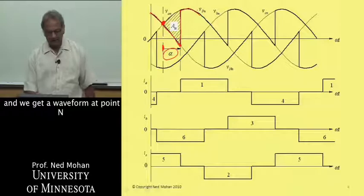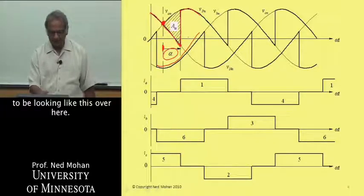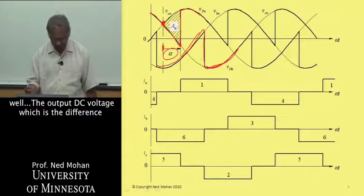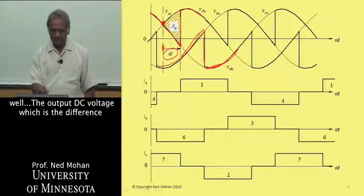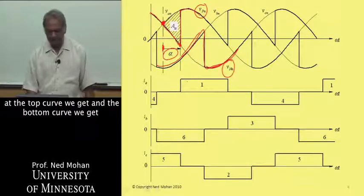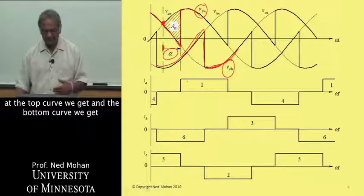We get a waveform at point N to be looking like this over here. So the output DC voltage, which is the difference between this and this, what we can obtain by looking at the top curve we get and the bottom curve we get.